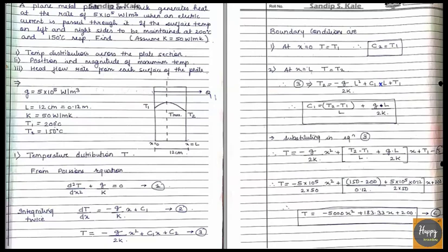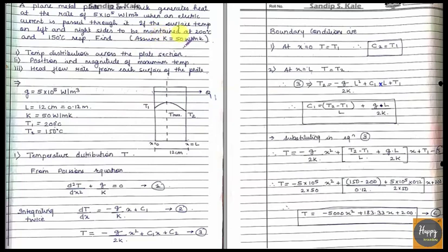We will read the problem statement and then move forward. A plain metal wall of 12 centimeter thickness generates heat at the rate of 5 × 10⁵ W/m³ when an electric current is passed through it. The surface temperature on the left side is maintained at 200°C and the right side at 150°C. The K value is also given.